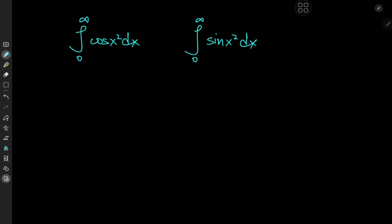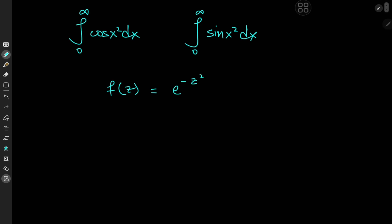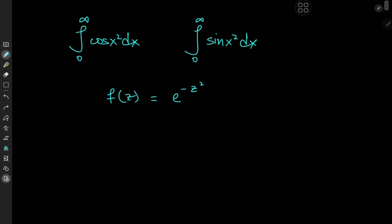The first thing we need is a complex-valued function f(z) that, when integrated on a closed contour, would render us the Fresnel integrals. So we'll define f(z) as e to the negative z squared — the complex Gaussian function. You might ask why not e to the negative i z squared, because by Euler's formula we would get cosine z squared and sine z squared. But the solution development using this complex Gaussian function works equally well, and it's a very nice solution development indeed.